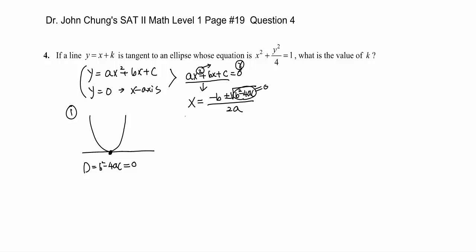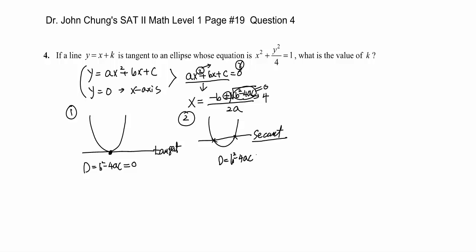So when b squared minus 4ac equals zero, the two graphs are tangent because they have only one intersection. The second case is when we have two intersections — the line is no longer tangent; instead it becomes a secant. To get plus or minus two numbers, the discriminant b squared minus 4ac must be positive.